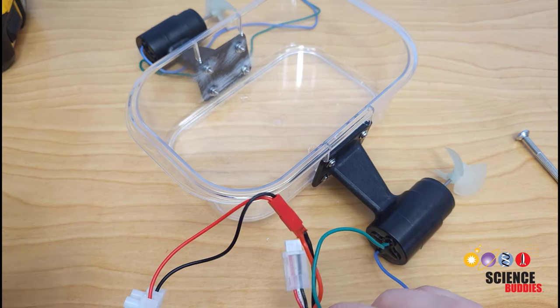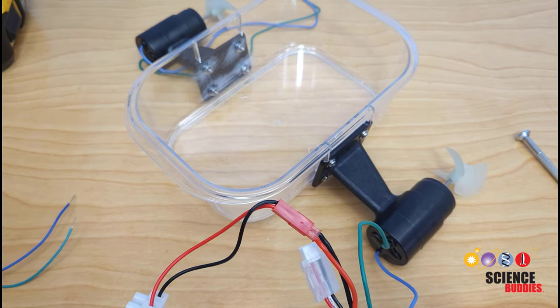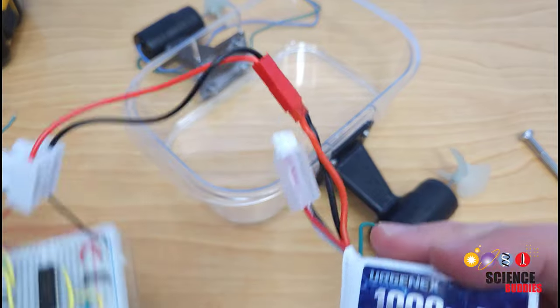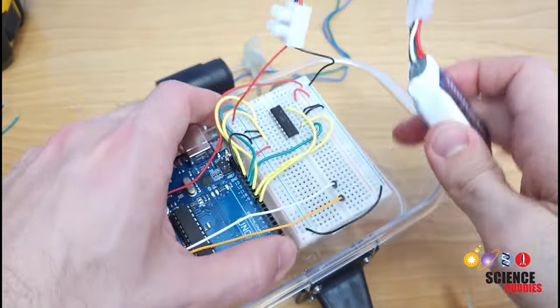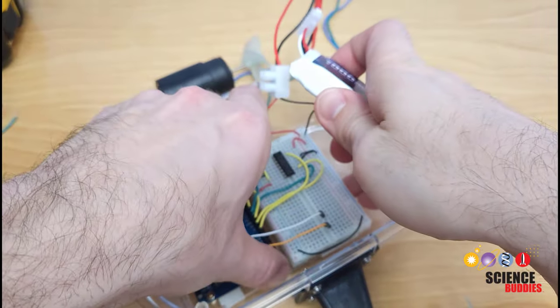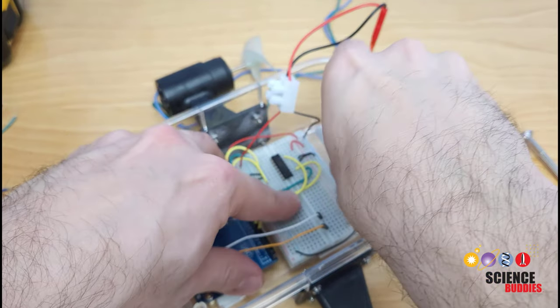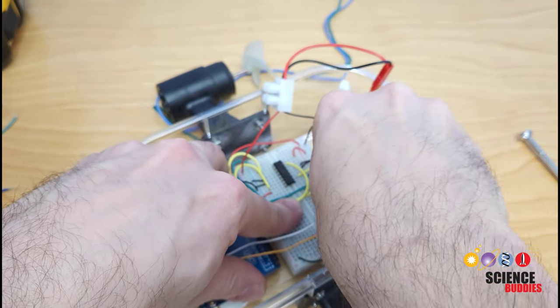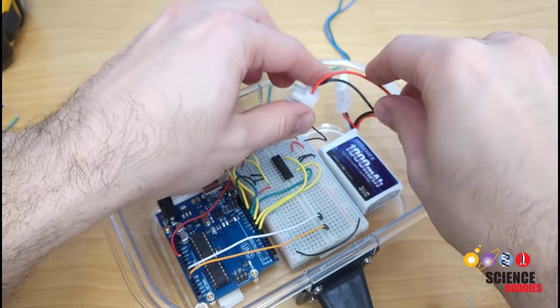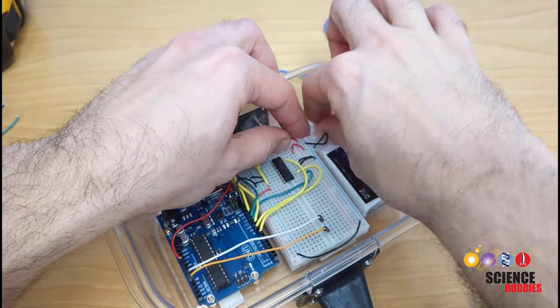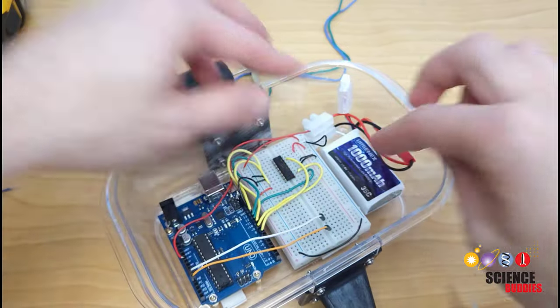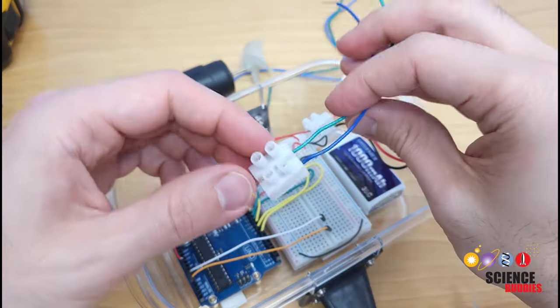After you've attached your thrusters and other accessories to the outside of your container, you can make sure the Arduino breadboard and battery all fit on the inside. But don't attach anything permanently yet because you're going to want to remove this later for leak testing. This is just a preliminary check to make sure everything fits nicely, and then later on, once everything is more permanent, you can use double-sided foam tape to stick it to the inside of the container.